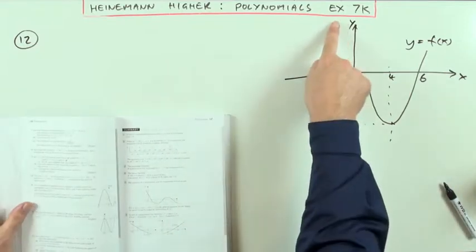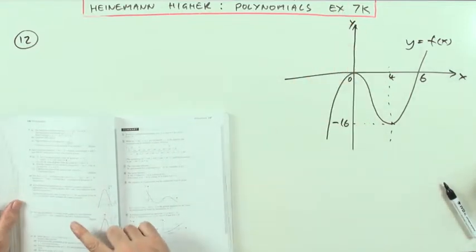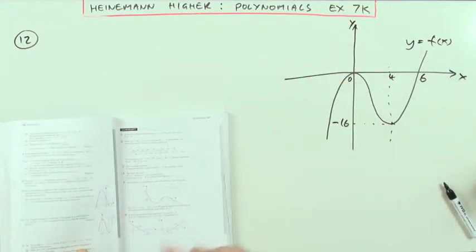Heinemann Higher, chapter 7 on polynomials, mixed exercise 7k at the end, number 12, a former Higher question.